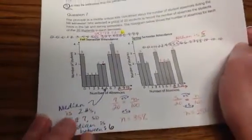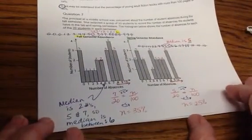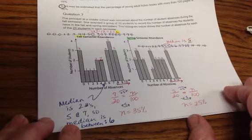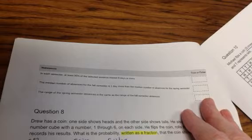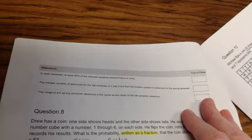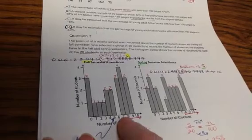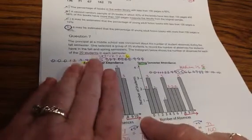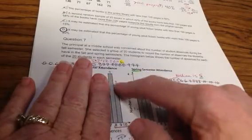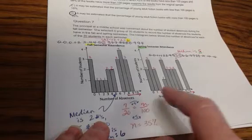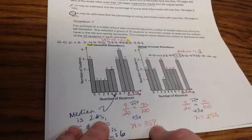The first question part asks, in each semester, at least 35% of the selected students missed 8 days or more. Well it was out of 20 students, so for 8 days or more, this has a total of 4 plus 3. There's none for 10, so that's 7 out of 20. To get from 20 to 100 is times 5, so 7 times 5 is 35. So that's 35 out of 100, which is 35%.